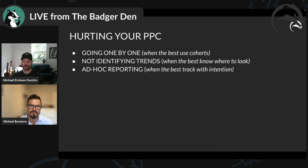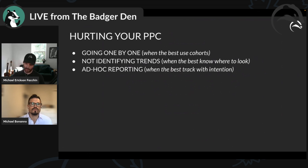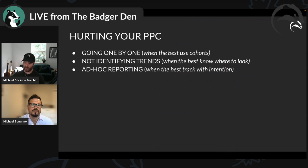The way people try to see around corners is they go one by one — into one campaign, make some actions on a few keywords, go back, look at another campaign, make actions, go back to the top level, another campaign — just going through really, really slowly. Instead, we're going to talk about how to use cohorts and saved filters.